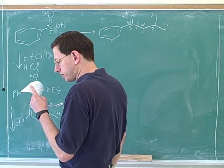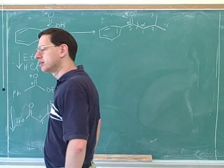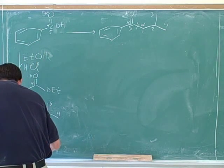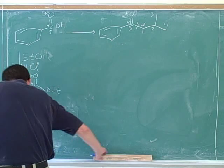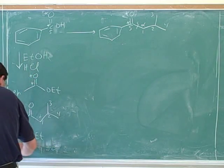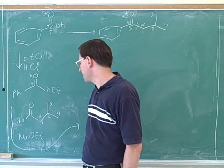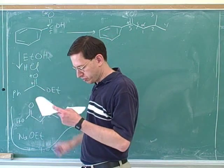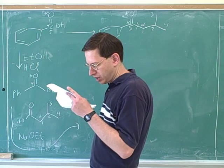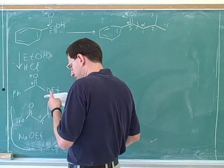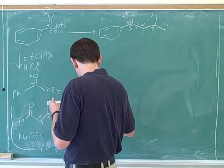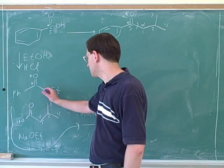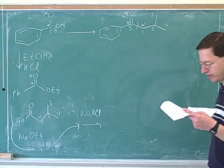Now remember that in order to do a Claisen condensation, you need a base. What base should we use? Remember we want to use a base that matches our leaving group, so we can put in sodium ethoxide as our base. Remember the purpose of the sodium ethoxide is to make the enolate. Now we should be able to show the product of the reaction between these two things. After that, we're also going to add H₂O and HCl. So let's show what the product would be of the reaction between these reagents without going through the whole mechanism.